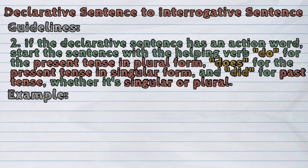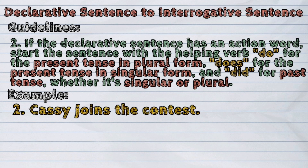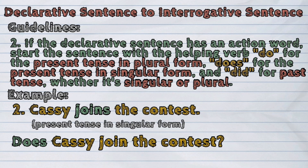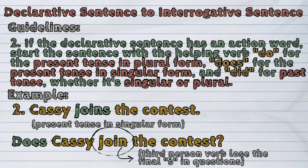Another example: Cassie joins the contest. The action word in the sentence is 'joins.' It's present tense in singular form, so we will use the helping verb 'does' to start the sentence. It will now become: Does Cassie join the contest? As you can see, 'joins' only becomes 'join.' Take note that third-person verbs lose their final S in questions.